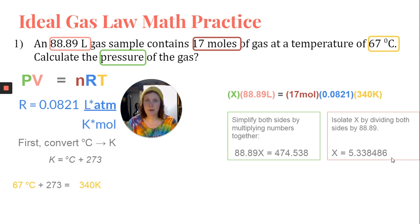The last step, of course, is going to be rounding according to the rules of sig figs. So if we look back at the values that have been given to us throughout the word problem, this has four sig figs. This has two sig figs. And this has two sig figs. So our final answer should also have two sig figs. And that would make our final answer to be 5.3 atm.